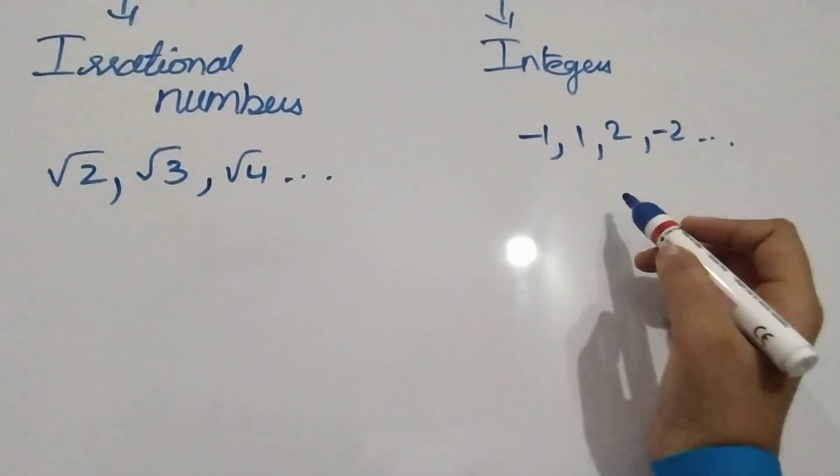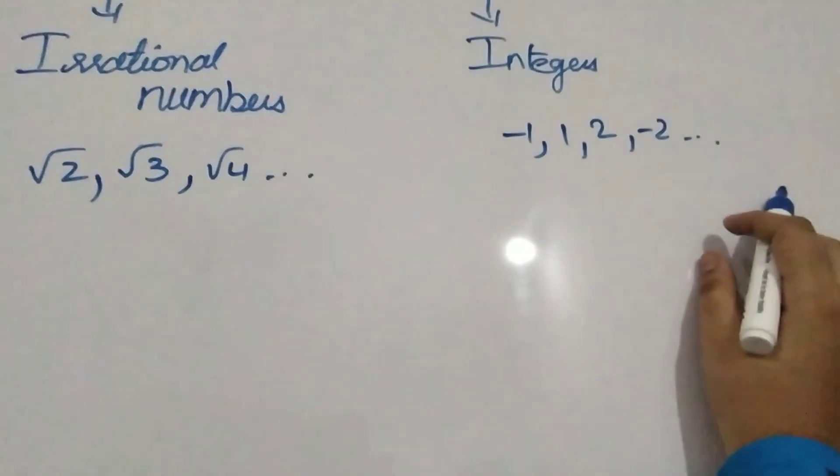Integers are minus 1, minus 2, so on till infinity.